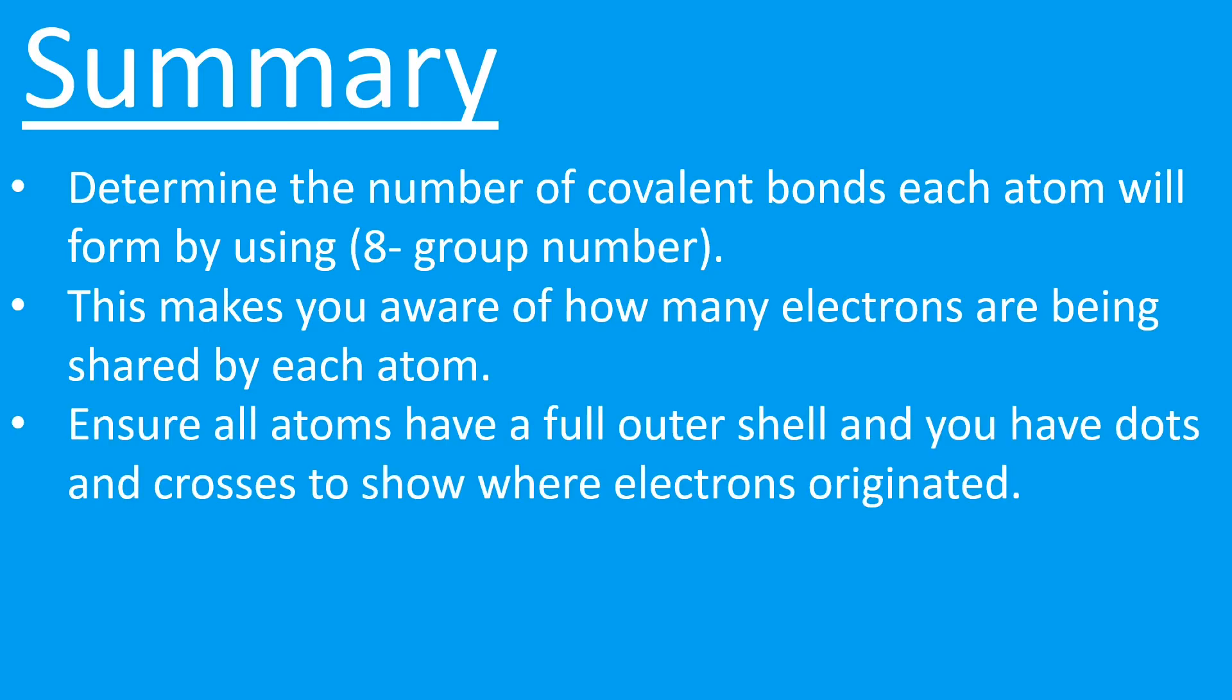And then once we draw these dot and cross diagrams, ensure that we have a full outer shell and we ensure that we've drawn dots on one atom and crosses on the other ones, and that allows us to track where those electrons originated from.